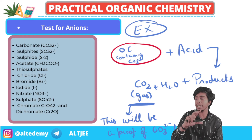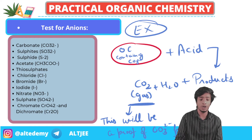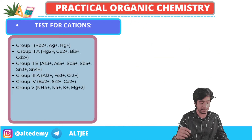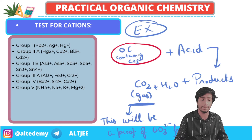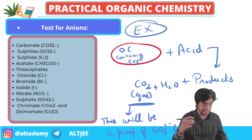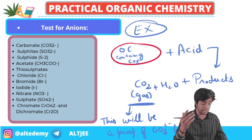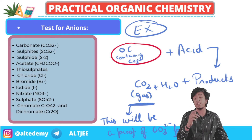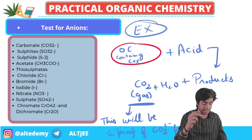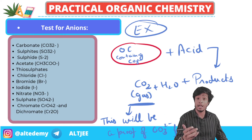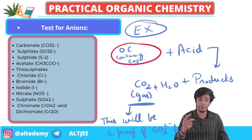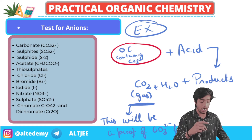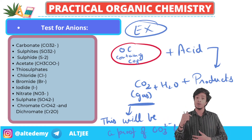So this is basically what practical organic chemistry is all about. We can detect sulfides and many other things. Then there is the test for cations - that is, how if there are cations present. In this example I have told you about the test for anions, how we can detect anions. Each and every anion will be having a separate reaction, which we will discuss in detail, and then we will move on to cations.